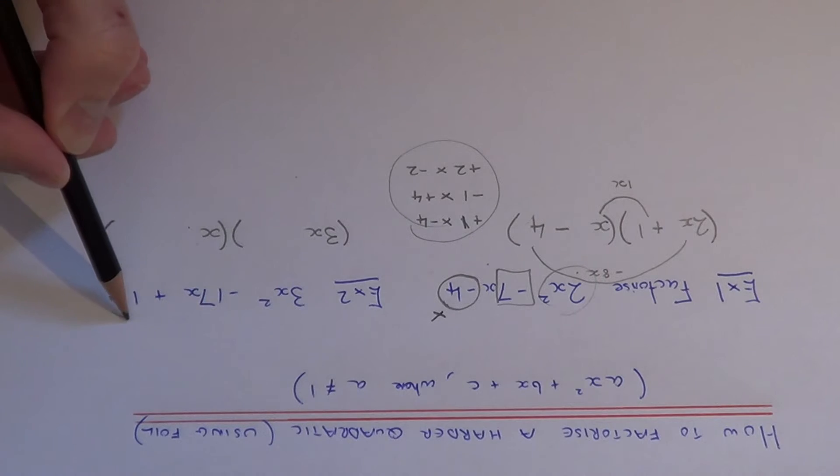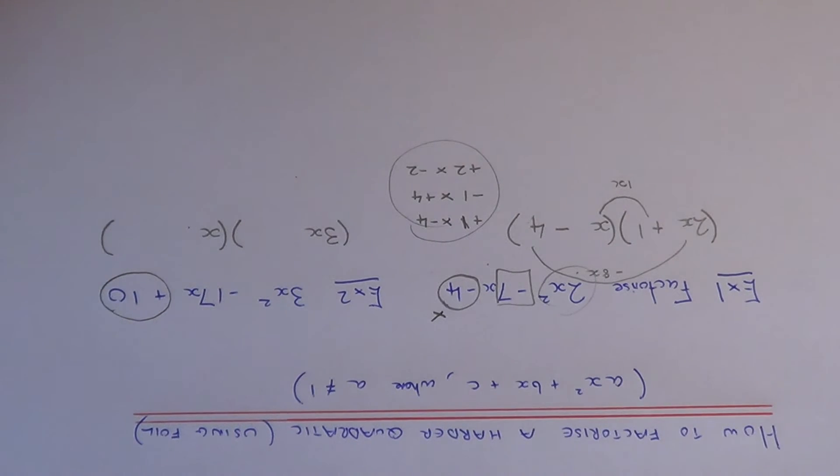We now need to think about the number at the end, the last term plus 10. Let's write down all the pairs of numbers which give plus 10: plus 1 times plus 10, minus 1 times minus 10, plus 2 times plus 5, and minus 2 times minus 5.